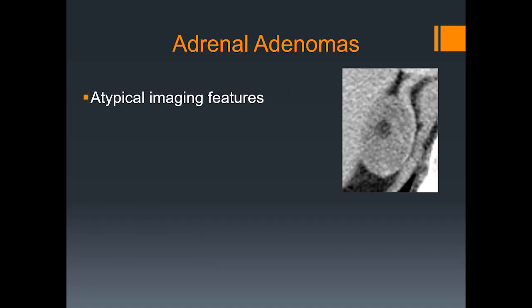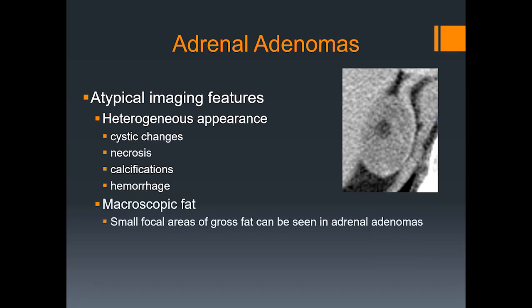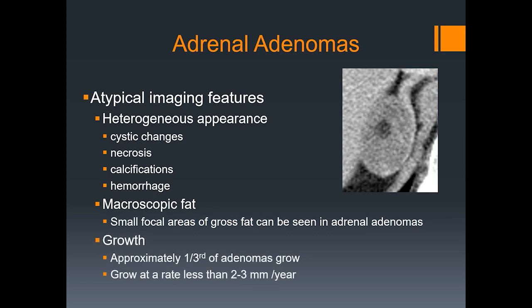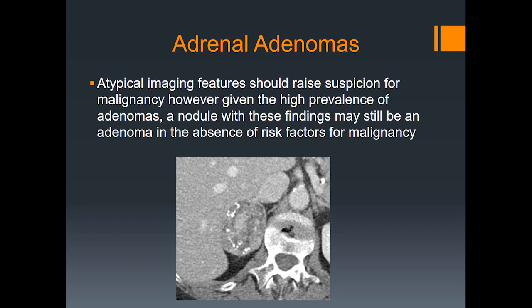Let's discuss atypical imaging features of adrenal adenomas. Rarely, they can have a heterogeneous appearance, including cystic changes, necrosis, calcifications, or hemorrhage — this occurs in larger lesions. Rarely, they can also have small foci of macroscopic fat. Regarding growth, adenomas can grow; roughly one-third of them grow, but quite slowly — on average about 1 mm per year, less than 2 to 3 mm per year. Atypical imaging features should raise suspicion for malignancy; however, given the high prevalence of adenomas, a nodule with these findings may still be an adenoma in the absence of risk factors — atypical features of common lesions may be more common than typical features of rare tumors.